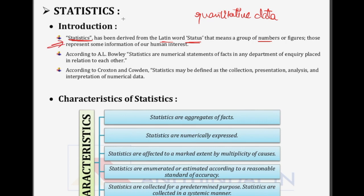In common words, we call any number a statistic if it has some use. For example, you may have heard that a particular country's GDP is a certain figure and another country's GDP is different. You can see how numerical data comes to us in the form of numbers and figures, which help us do many things — not just for large entities like companies and countries.